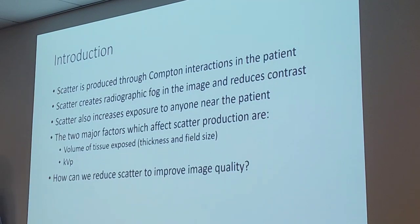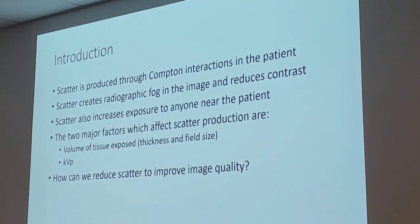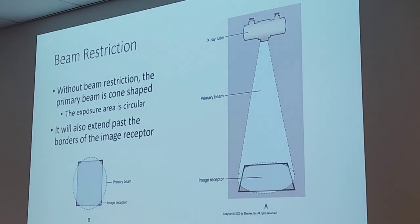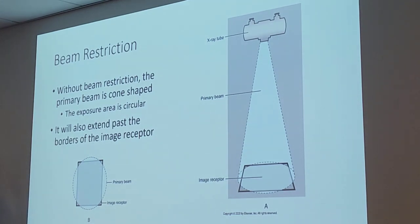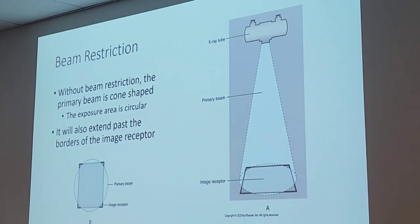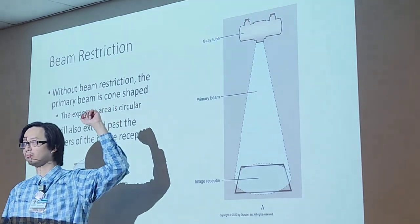So how do we reduce scatter to improve image quality? That's the big question for this chapter. As scatter increases, contrast decreases — kVp and scatter are directly proportional, and scatter and contrast are inversely proportional, so kVp and contrast are also inversely proportional.